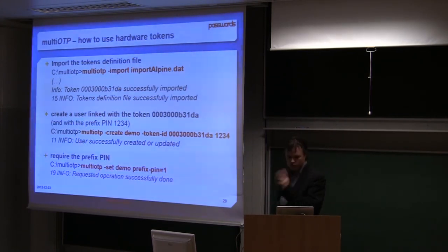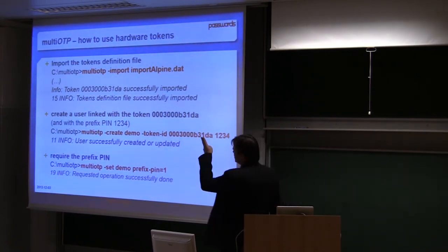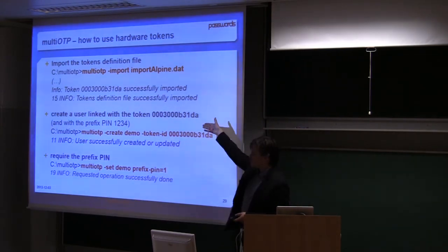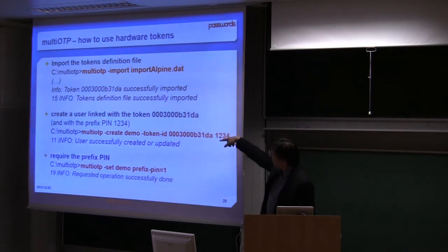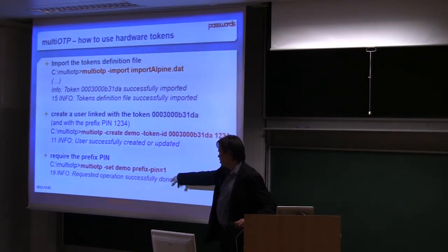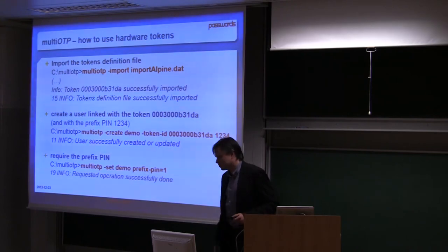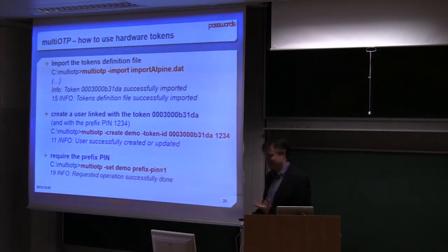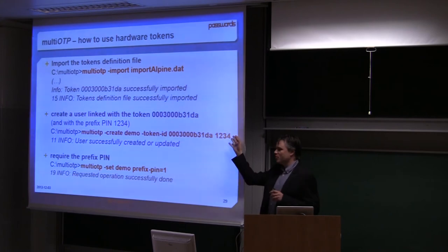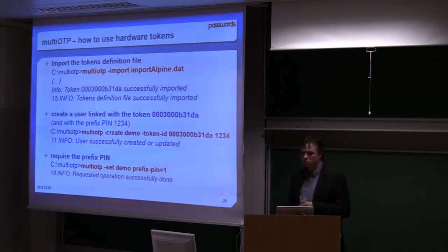At the end you can also import hardware tokens. You say multi-OTP import, put your file and you will receive the list of the different hardware tokens that were imported. After you can link the user with any token. At the end I enable the prefix pin to have the real two-factor authentication. I put one, two, three, four, but you can put more than four pins, it's independent. You can also put alphanumerical numbers.